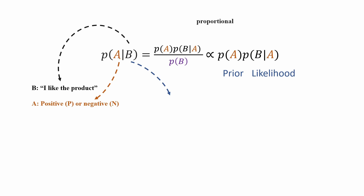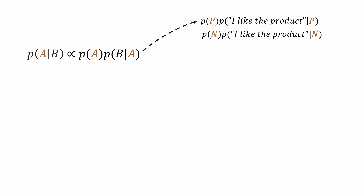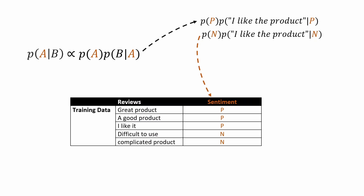So let's ignore the denominator and focus on the left and right-hand side of the original formula. A can be political or negative — sentiment classification can have more than two categories like neutral, but here we simplify to binary. We replace A with politics or negative. To calculate the prior, based on the training data, we can see there are five instances: politics has three and negative has two, so we can easily calculate the prior probabilities.